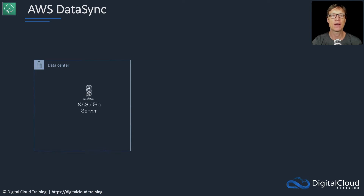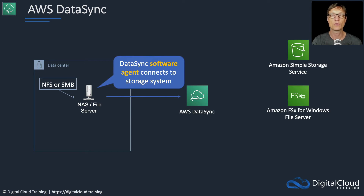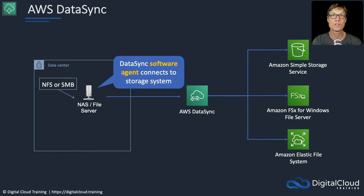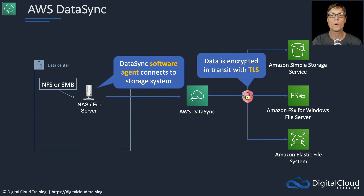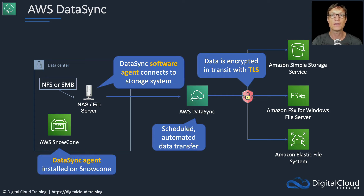We then have AWS DataSync, which is about synchronizing data between on-premises storage systems and the cloud. Your on-premises storage might be NAS servers running NFS or SMB protocols. You use an agent to connect to the storage system, and then you can synchronize your data into various backend storage systems on AWS, including S3, FSx, and Amazon Elastic File System. Data is always encrypted with TLS — that's encryption in transit. You can schedule and automate your data transfers with DataSync. You can also install the DataSync agent on AWS Snowcone; Snowcone can then connect to DataSync and synchronize your data into S3.